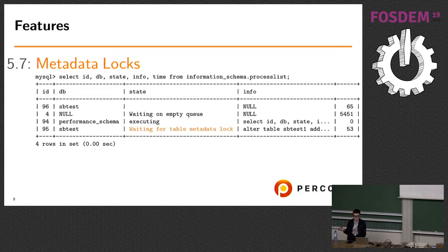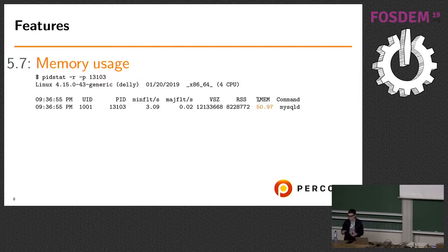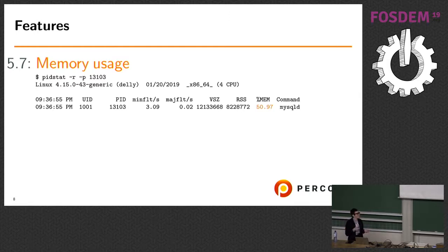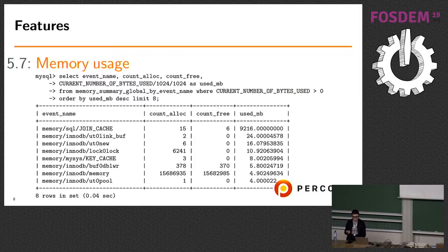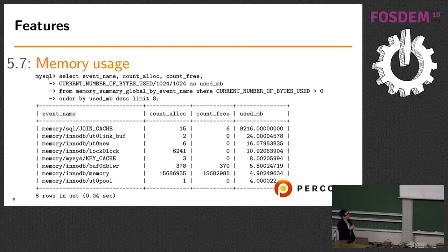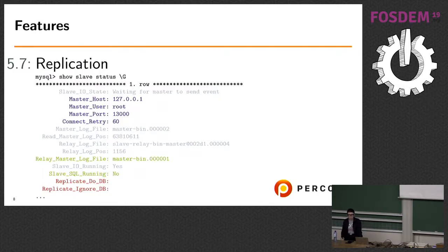Once you see that thread 96 is actually doing nothing — probably just hasn't closed a transaction — you can either kill that thread or wait for it to finish. My favorite feature is memory usage. As a support engineer I often receive complaints about memory, but from OS output you can't tell what MySQL is doing. With Performance Schema you can run a query and find out exactly what is consuming memory. For example, one part might be the join cache for a large join, another part InnoDB — once you know MySQL options it's easy to interpret.